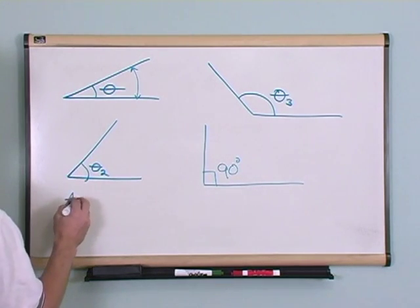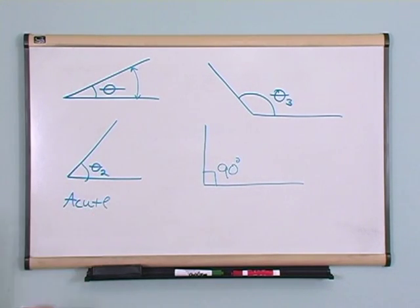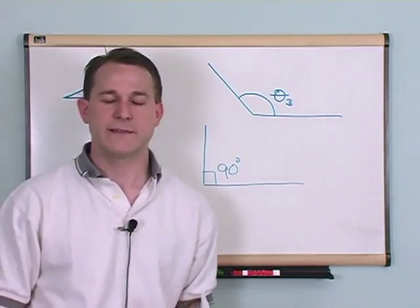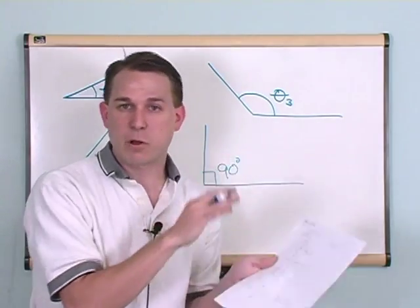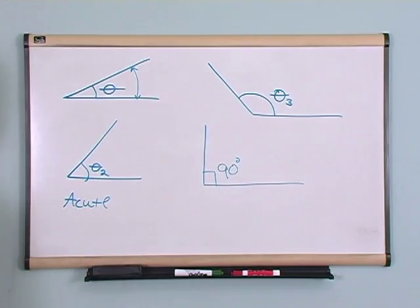These angles are called acute, and if you want to be nice about it, you can say they're cute little angles, they're real small and cute. So they're less than 90 degrees.